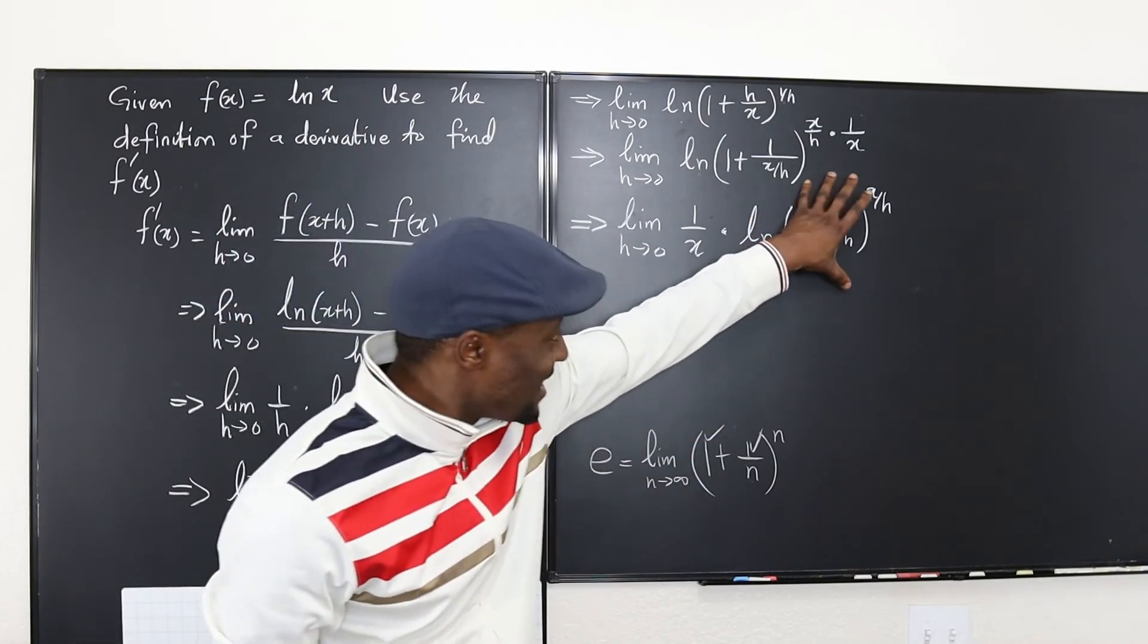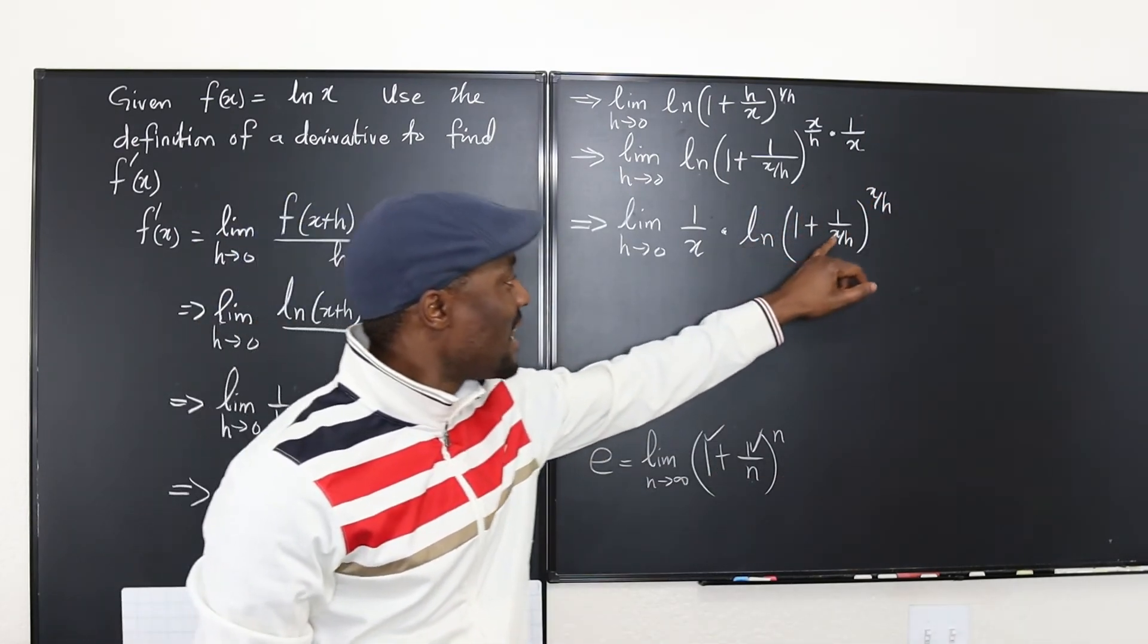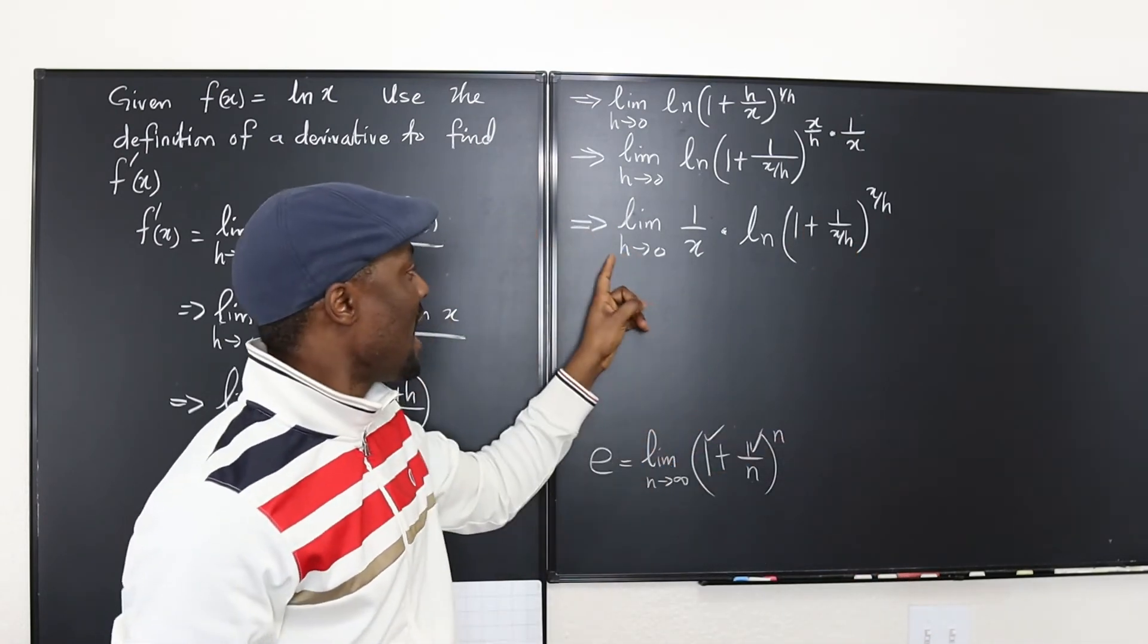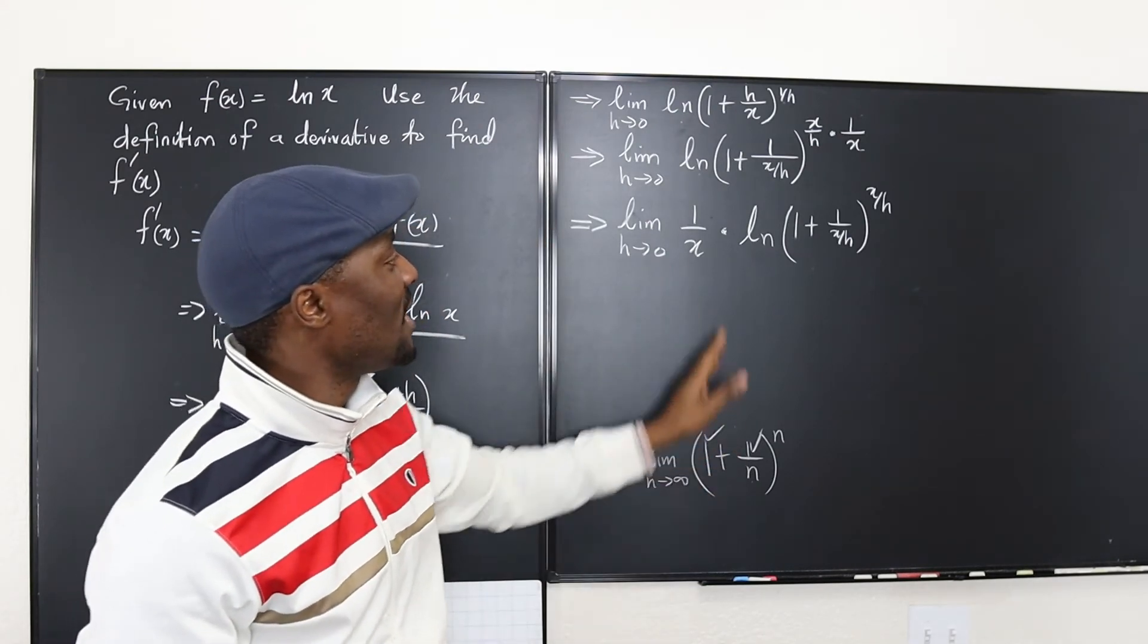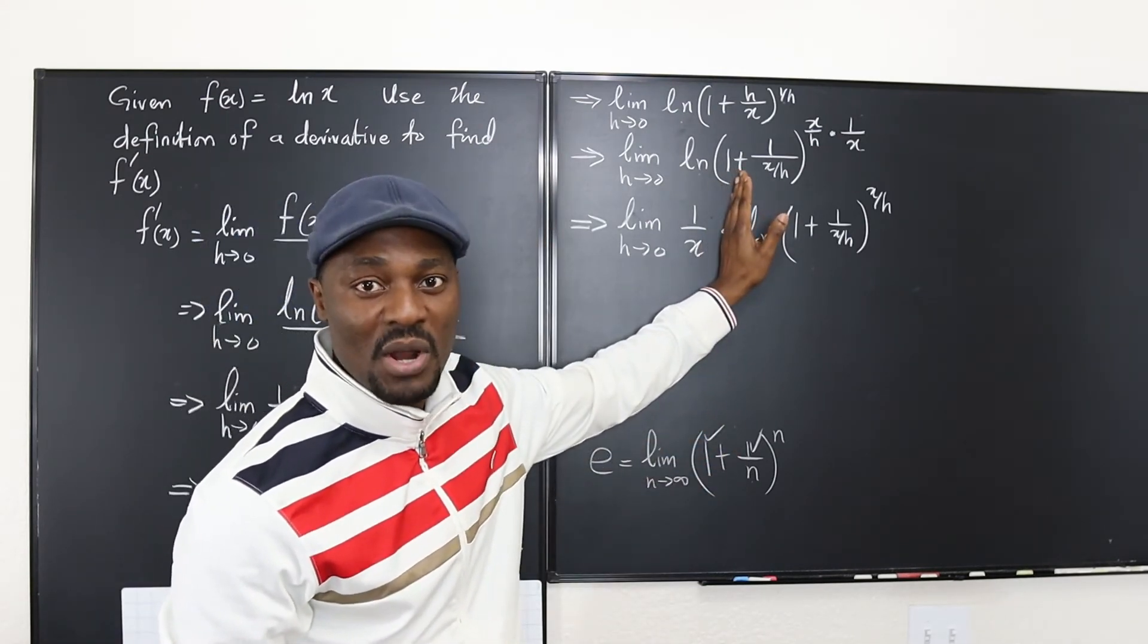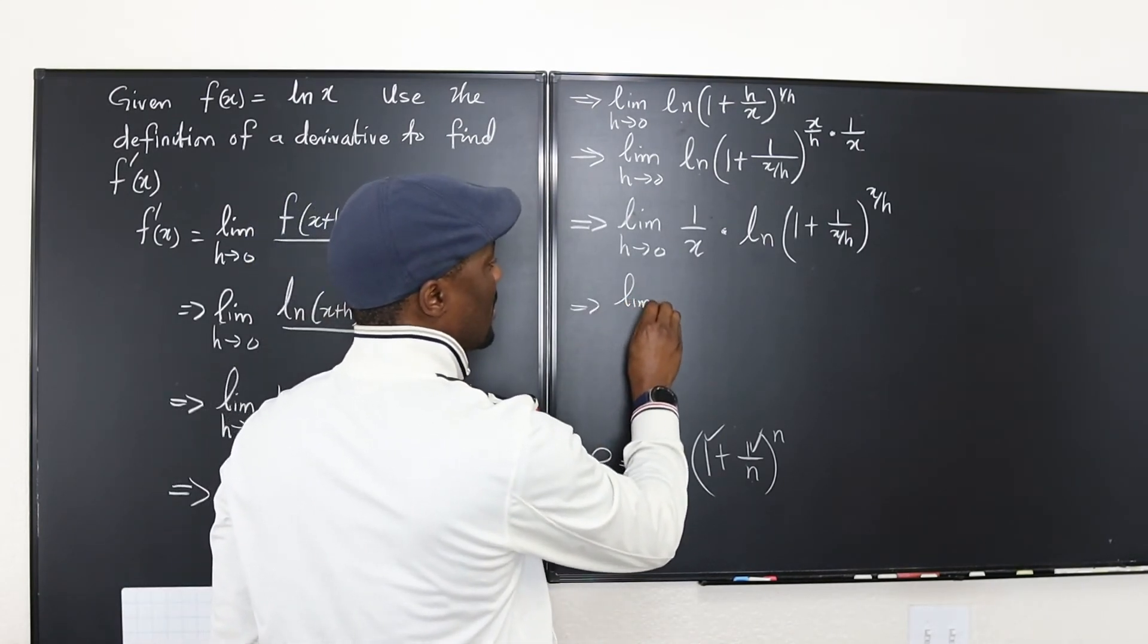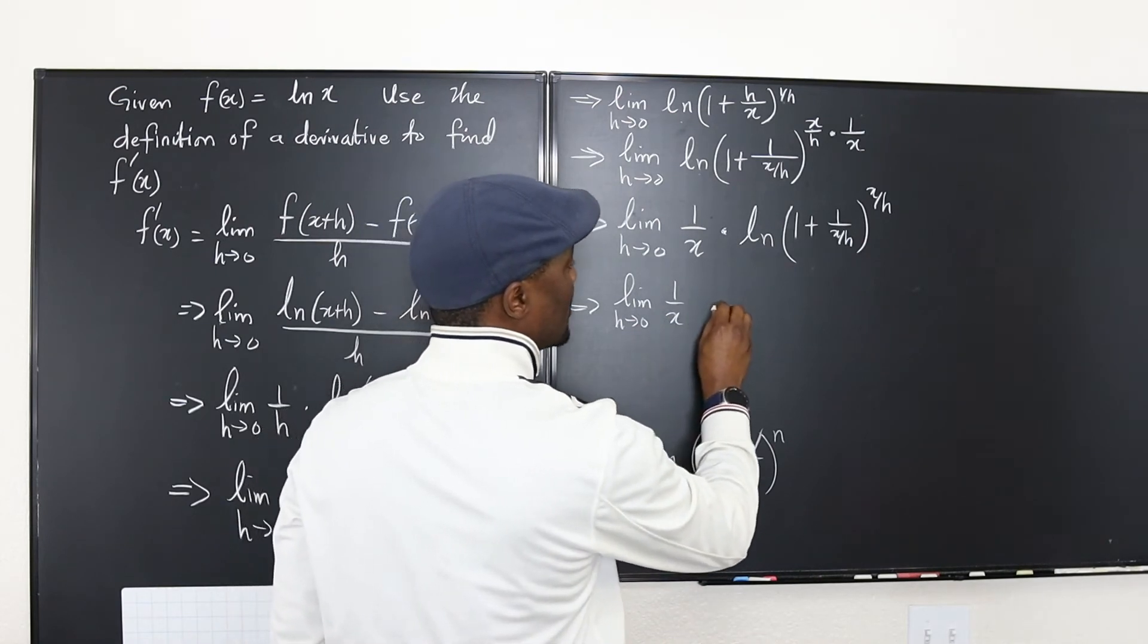Now this is e as x over h goes to infinity which will happen as h goes to 0. Now let's apply limit laws which means we can treat this as a product.